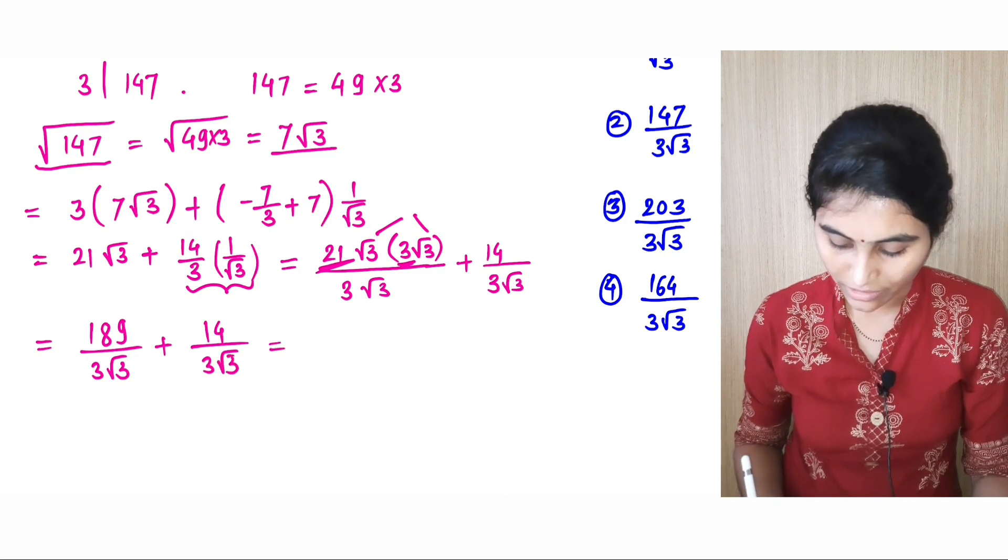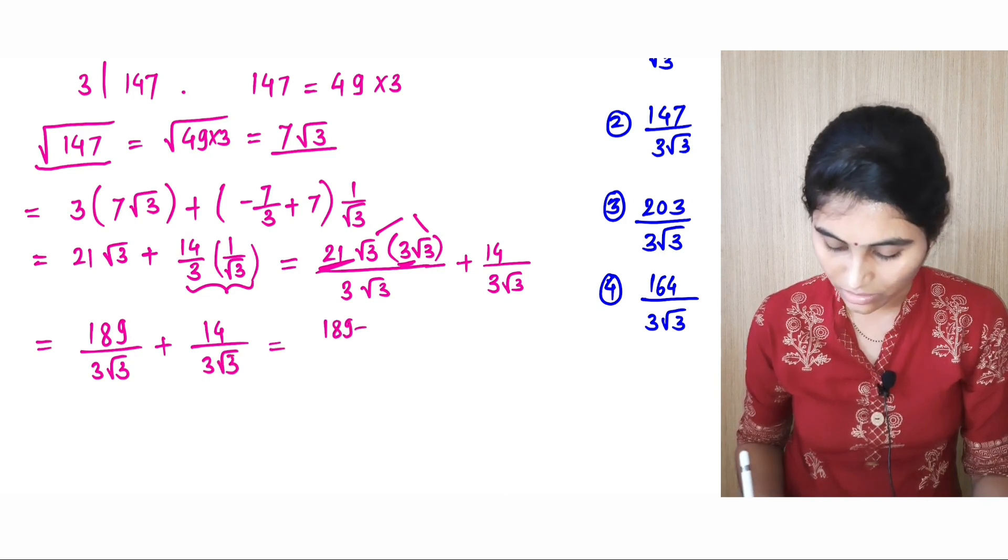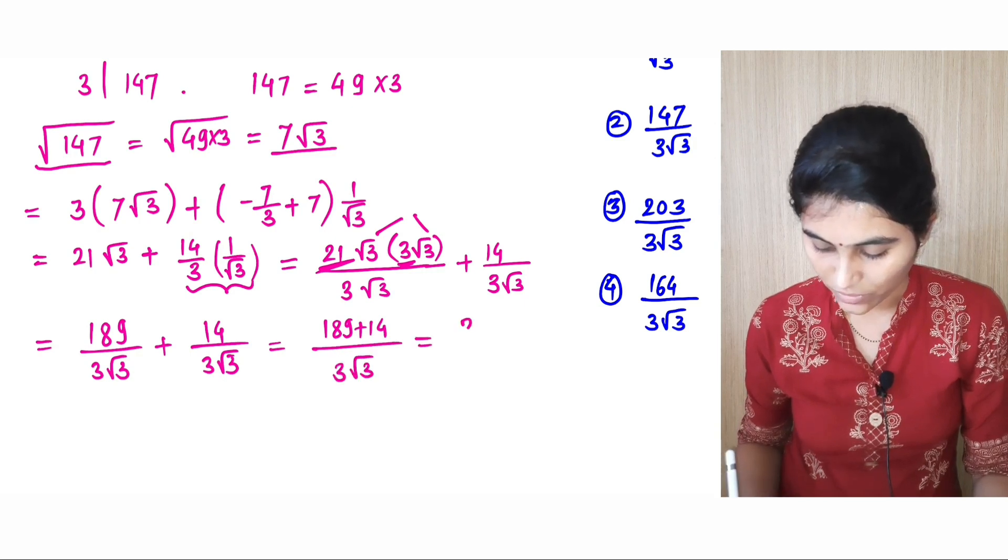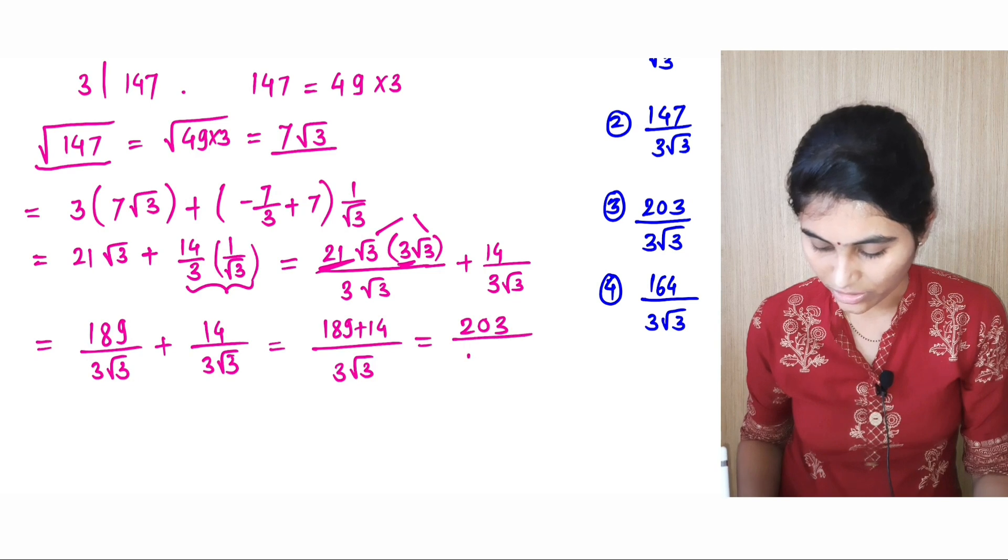Now just add 189 plus 14, and denominator is as it is. So this is equal to 203 divided by 3 root 3.